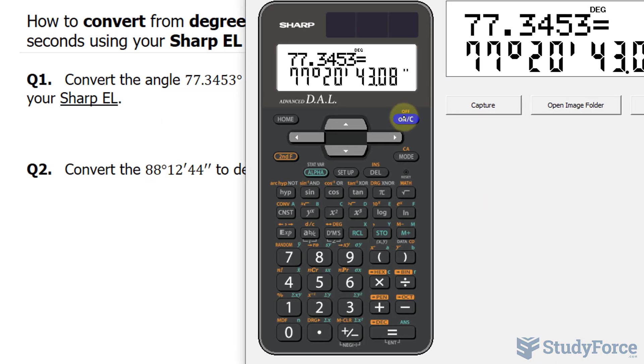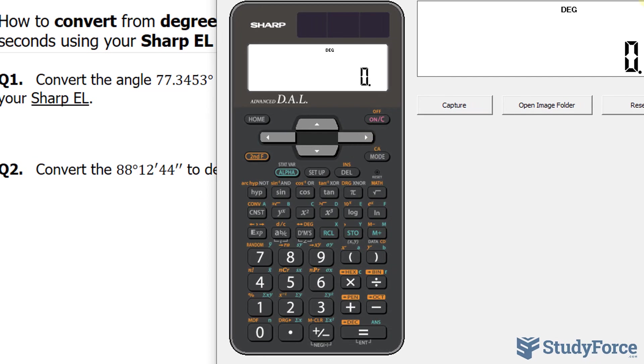So turning it on, make sure that you clear the screen. Let's type in our angle: 88, DMS, that opens up the degrees. And then number 12, again DMS, 44.